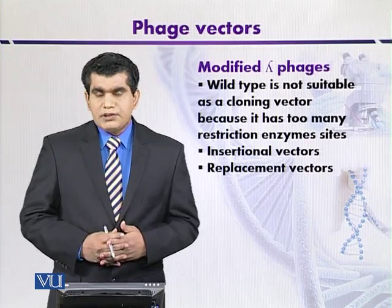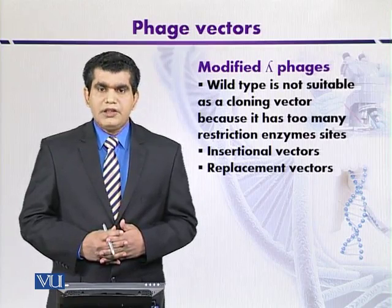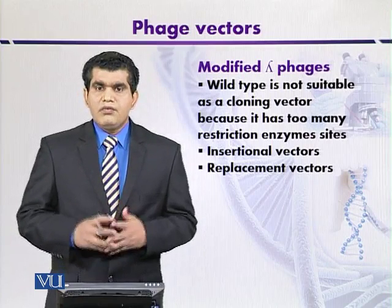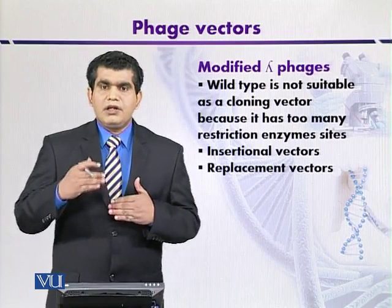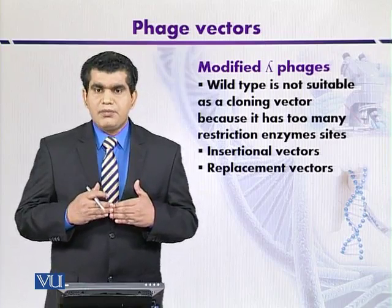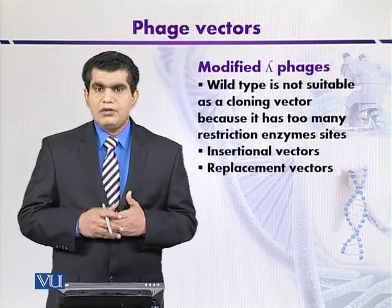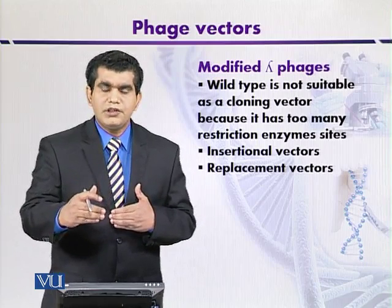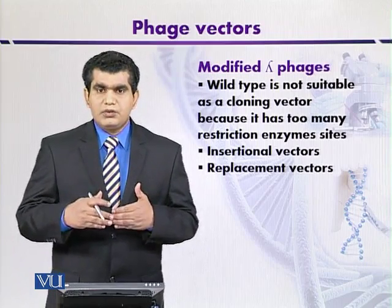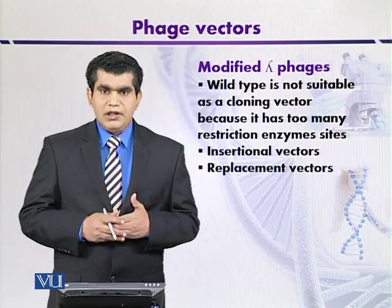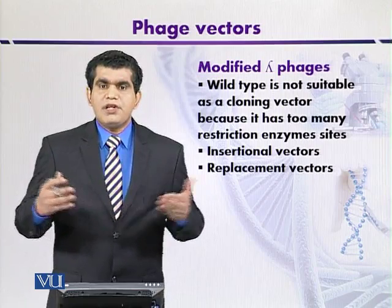A few examples of the modified lambda phages are Charon vectors, which include Charon 4A, where the restriction sites may be 2 to 3. The non-essential DNA fragments can be removed and replaced with foreign DNA. Because we are removing the non-essential region and replacing it with foreign DNA, this is why it is called a replacement vector. Like Charon 4A, it is a replaceable vector.